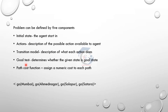The five components are: first, initial state — the initial agent starts. Second, actions — a description of the possible actions available to the agent, that is, the routes of the agent. Third, transition model — a description of what each action does: if you go on a route, you arrive at a state; action leads to a result.